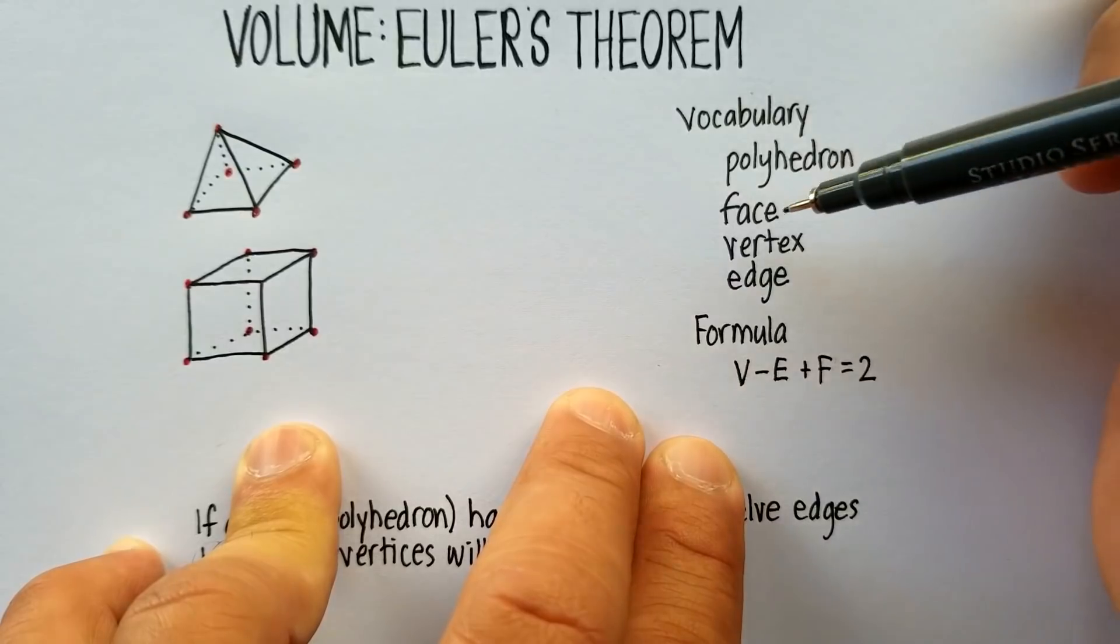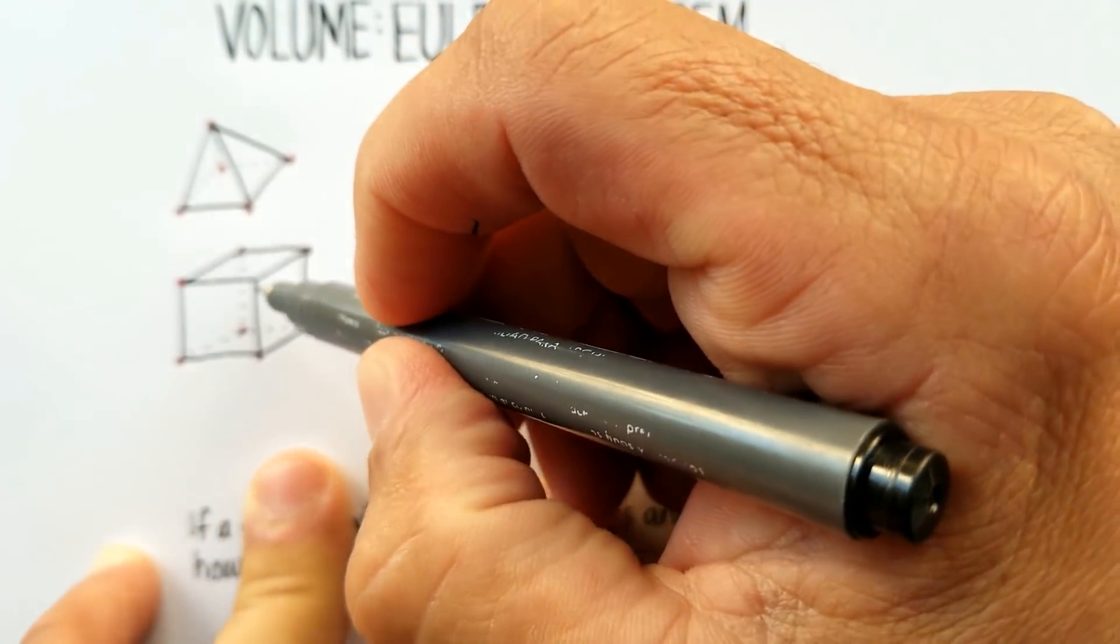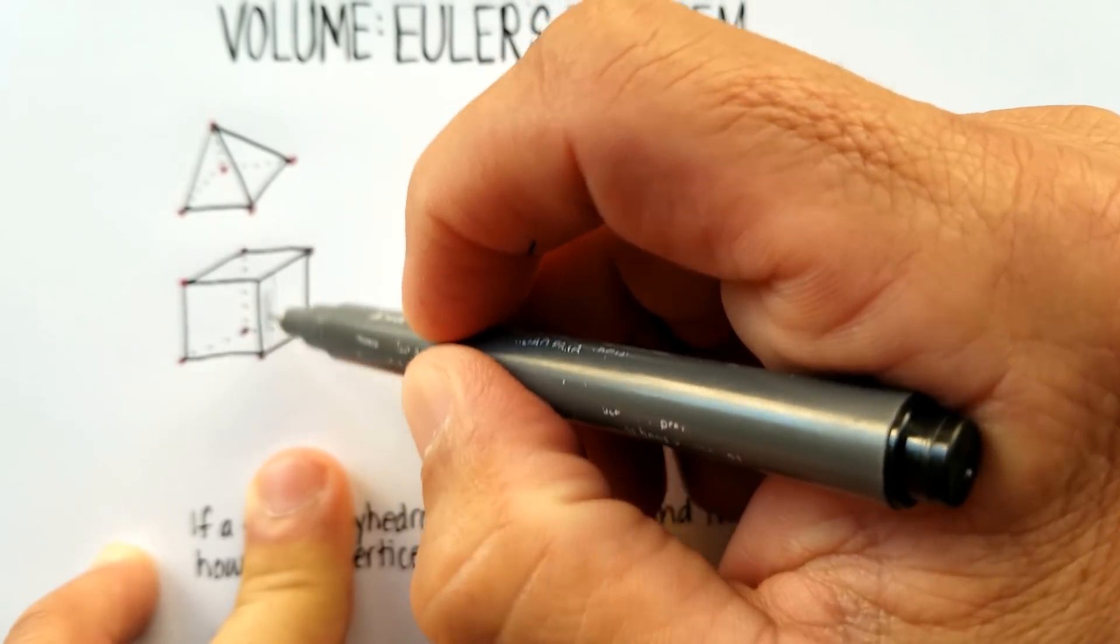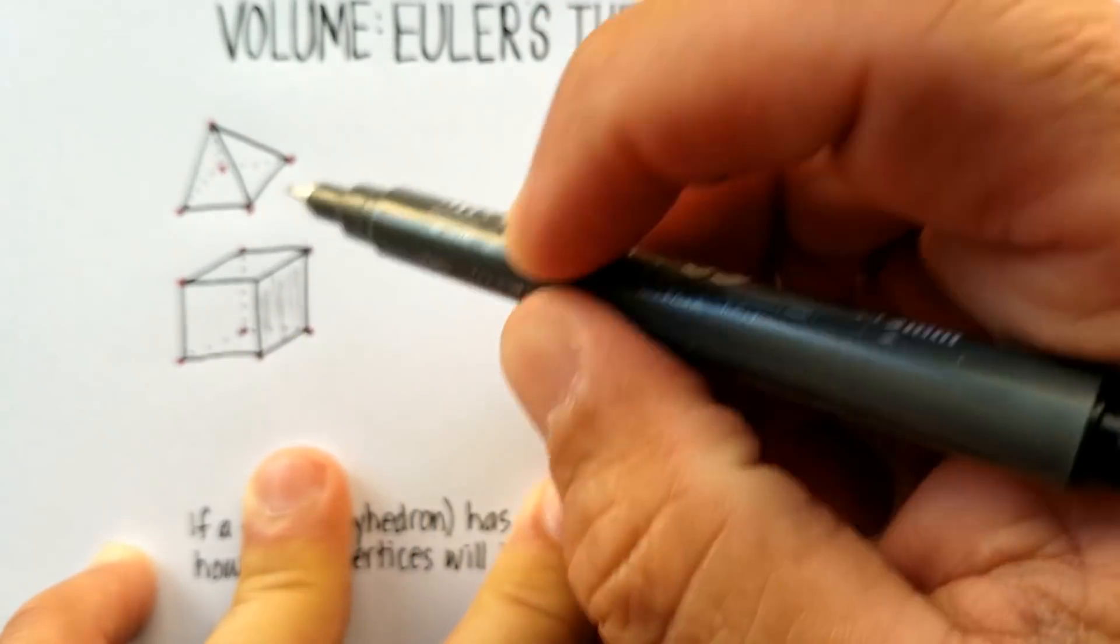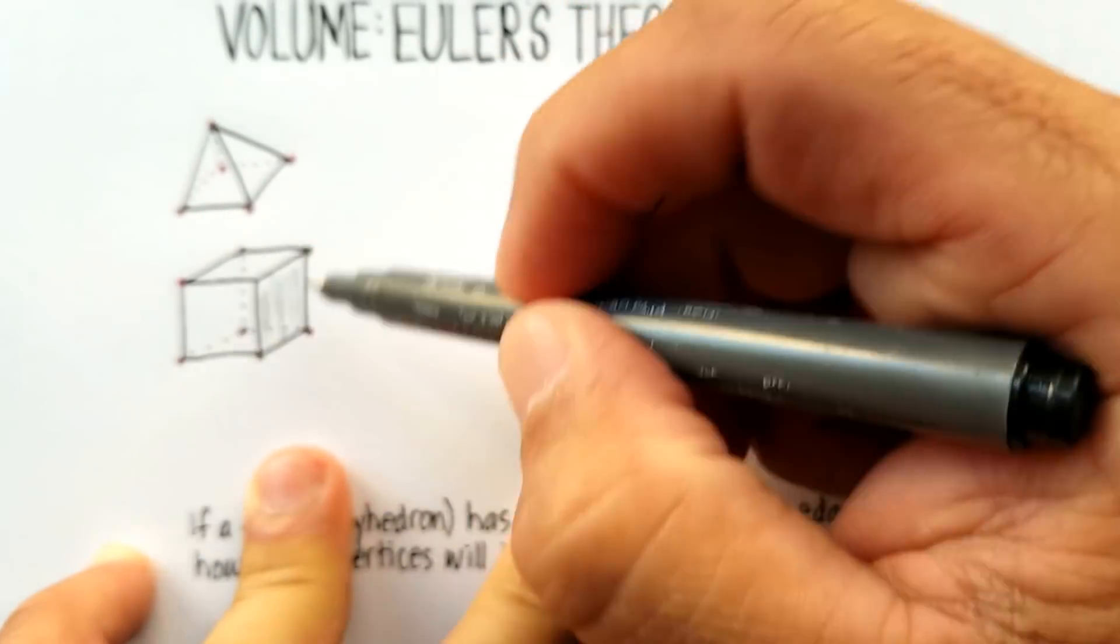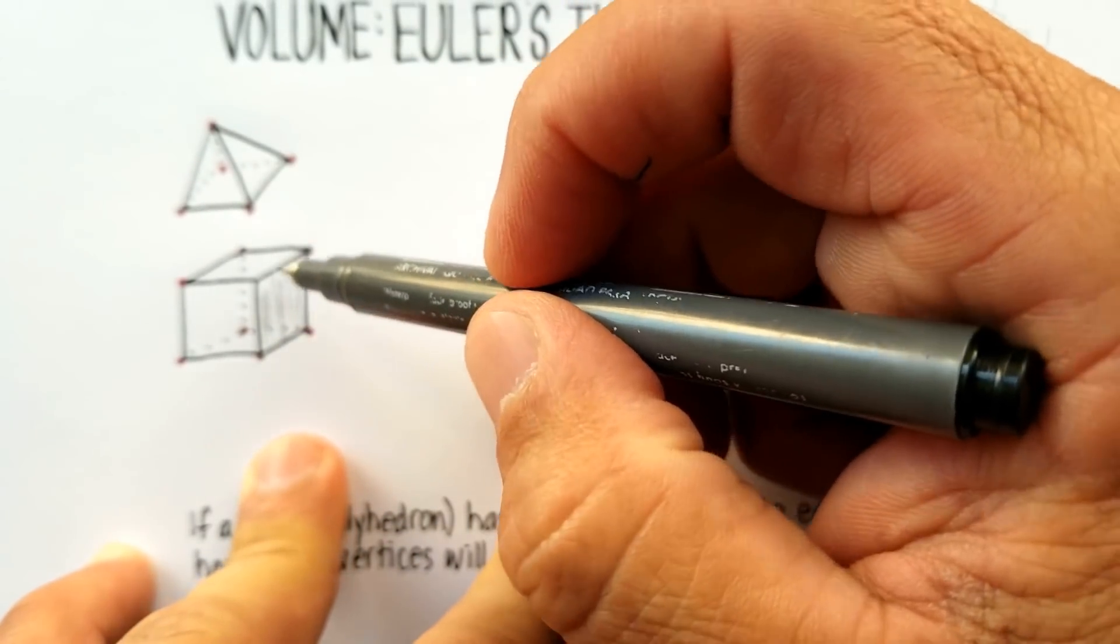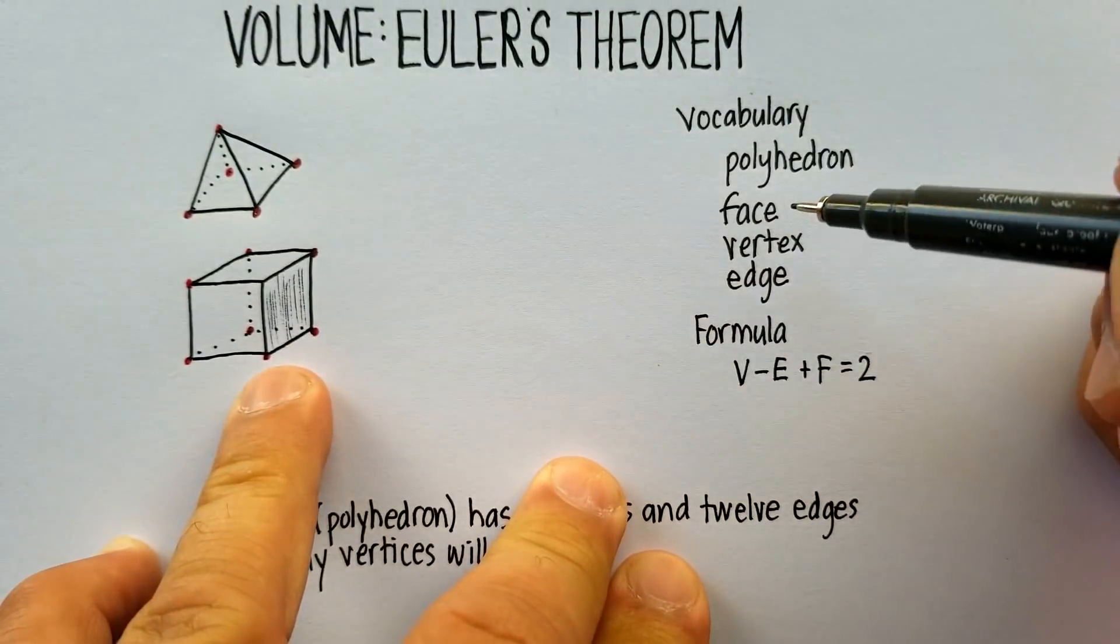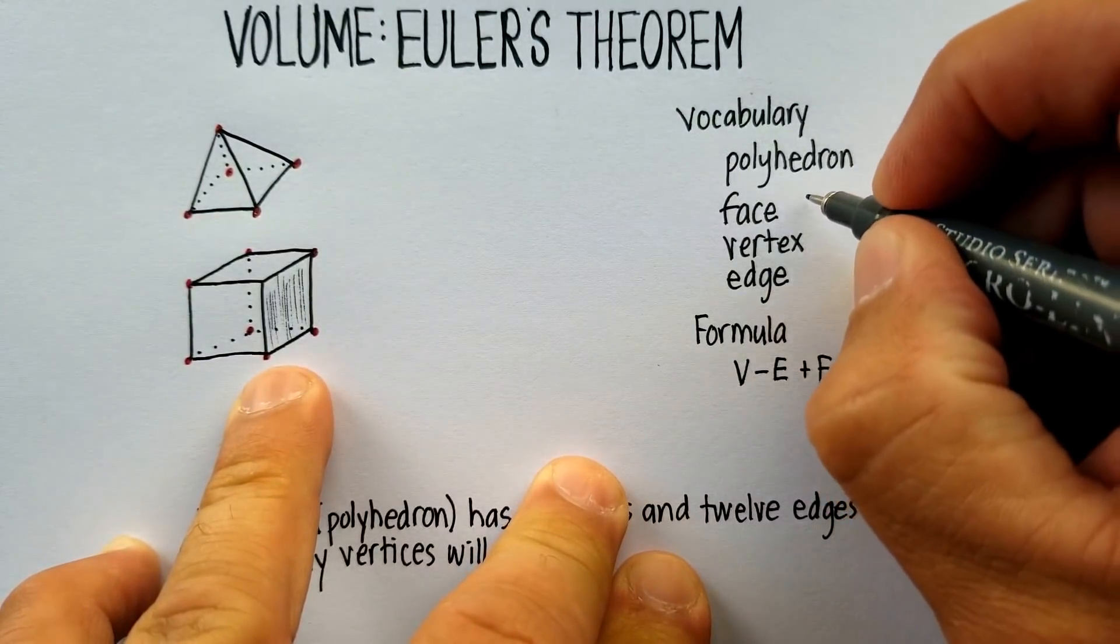Now, the face is simply, let's just take actually this one. It's a little bit easier to see. It's just what it means, what it implies. It's the square side, for example, of a cube. It would be like if this were a dice. It would just be the one side of a cube. That's known as a face, and it's abbreviated as F.